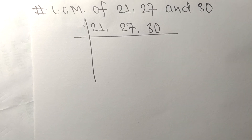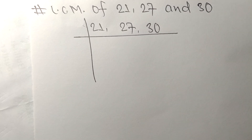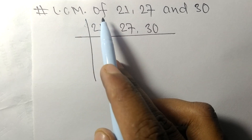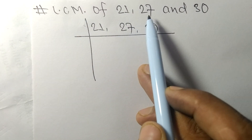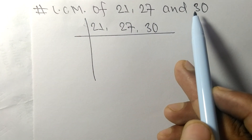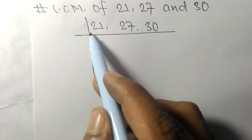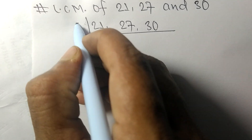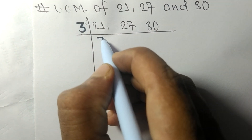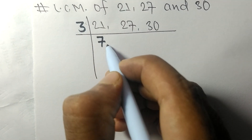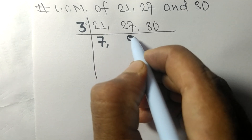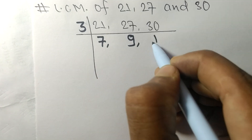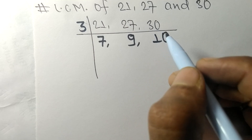Today we shall learn to find the LCM of 21, 27, and 30. All these numbers are divisible by 3: 3 times 7 equals 21, 3 times 9 equals 27, and 3 times 10 equals 30.